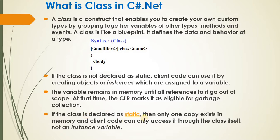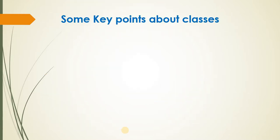If the class is declared as static, then only one copy exists in memory. Any client code can only access it through the class itself. If a class is static, we cannot access that class by creating an instance variable — we can only access it by calling it directly through the class, not through an instance variable.